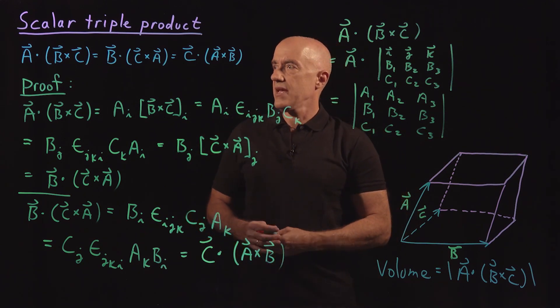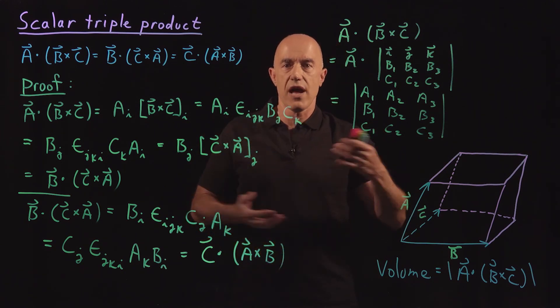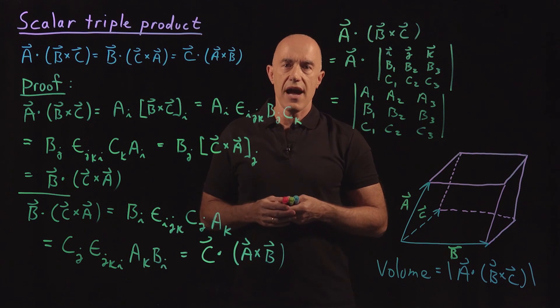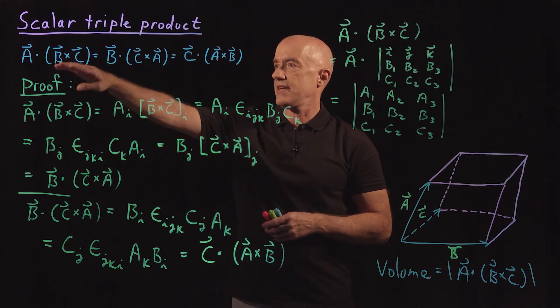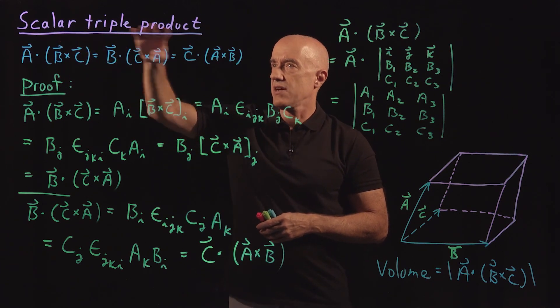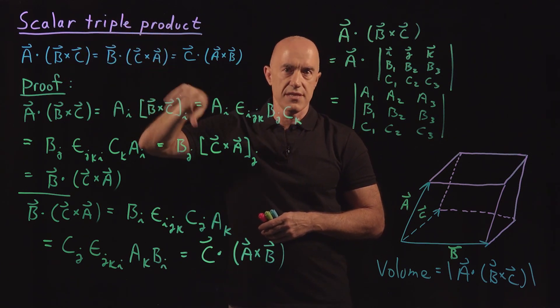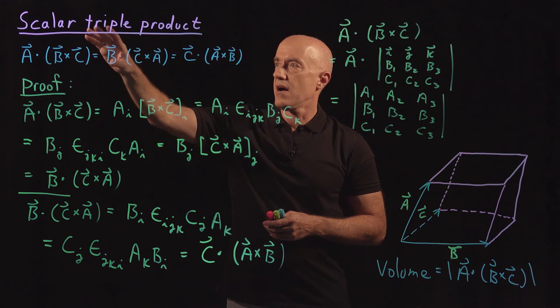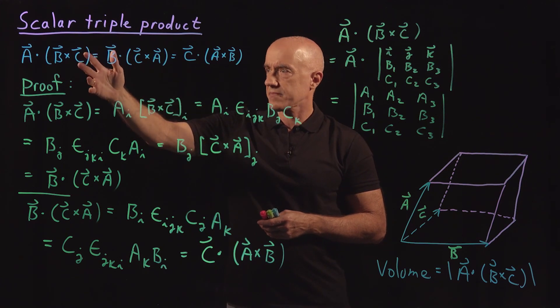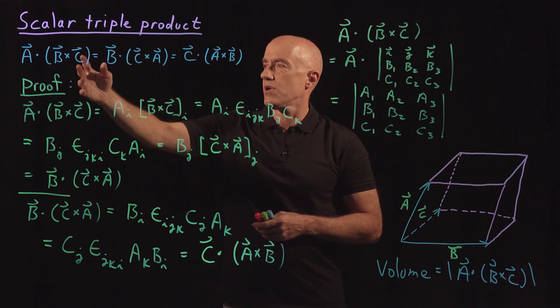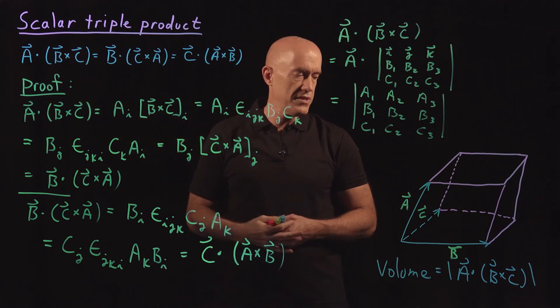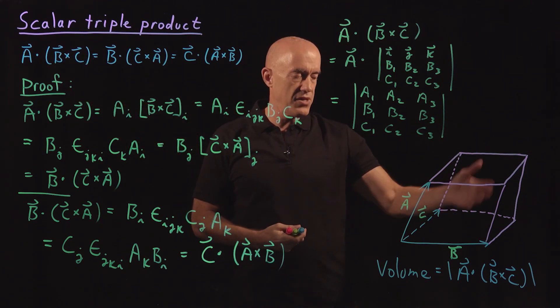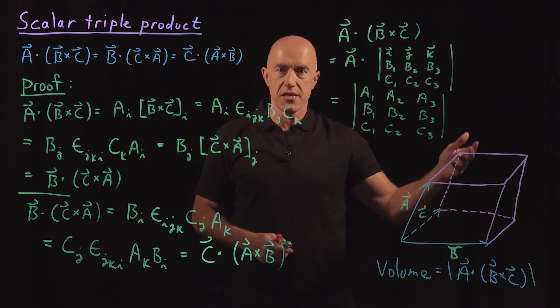Let me summarize. In this video, I'm trying to show you how one does, how one proves these vector identities. We're looking at the scalar triple product, which is sometimes a useful vector identity. It also is a useful quantity, because it represents the volume of a parallelepiped.